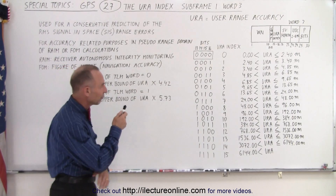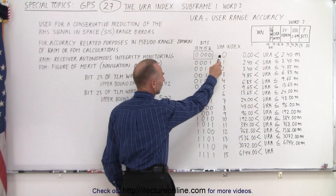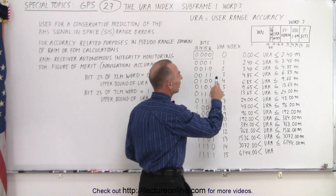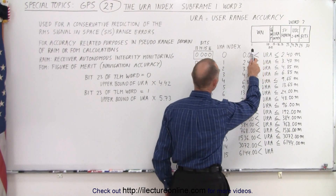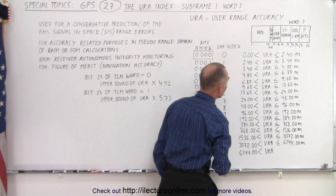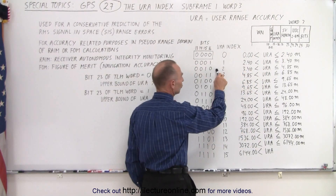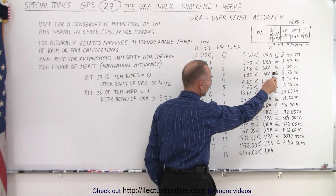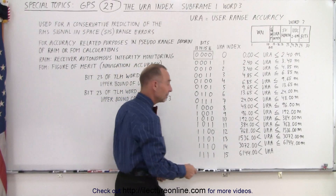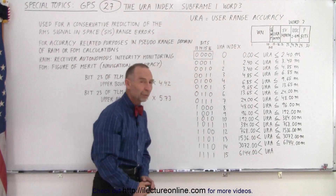Notice that the four bits allow for 16 different settings, and for each setting we have URA index number 0 through 15. If it's set to 0, the URA — the User Range Accuracy — is somewhere between 0 and 2.4 meters. If it's set to 1, it's somewhere between 2.4 and 3.4 meters. If it's set to 2, it's somewhere between 3.4 and 4.8, and so forth. At the final setting, when it's equal to 15, it means that the URA index is greater than 6144 meters.